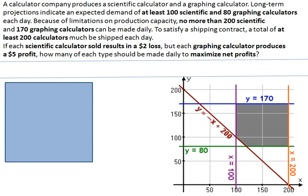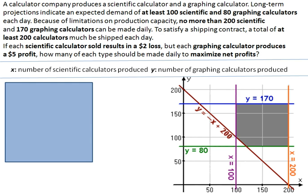We've got to first assign variables to the unknown, so we can call the number of scientific calculators produced X, the number of graphing calculators produced Y. We'll use that to come up with our constraints, and the first one is a real-life constraint. You can't have negative calculators. That's any of these word problems—pretty much you're always dealing with X is greater than zero, Y is greater than zero.